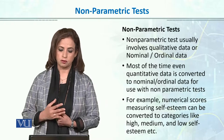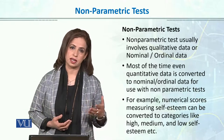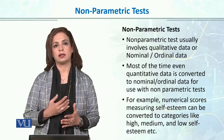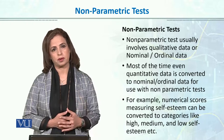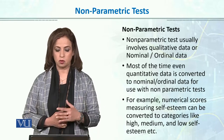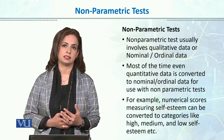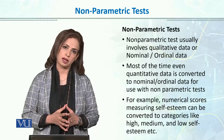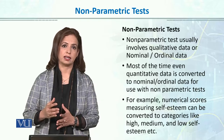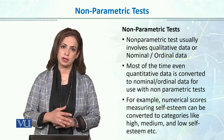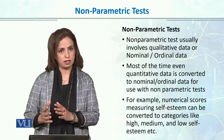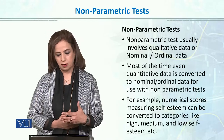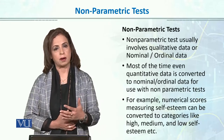Non-parametric tests usually involve qualitative data. Remember, the biggest reason when we switch from parametric to non-parametric tests is that our data is qualitative, or nominal, ordinal, or categorical — it is not continuous running-score data. Most of the time, even quantitative data is converted to nominal or ordinal data. There are many situations where parametric assumptions are not met or our sample size is small, so even if our data is quantitative on an interval or ratio scale, we still choose non-parametric tests and convert that quantitative data into nominal or ordinal scale data.